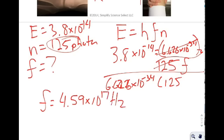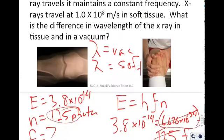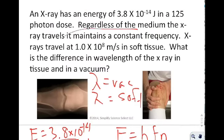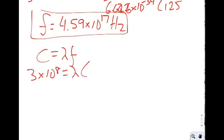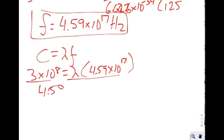That frequency is in hertz. Now using C = λF with C = 3 × 10⁸ m/s: 3 × 10⁸ = λ × 4.59 × 10¹⁷. Dividing both sides by 4.59 × 10¹⁷ gives a wavelength of approximately 6.53 × 10⁻¹⁰ meters in a vacuum.